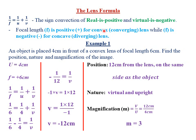The focal length f is positive for a convex, also called a converging, lens. This is because a convex or converging lens will always have a real principal focus, and because the focal length is the distance from the principal focus measured from the optical center, it means that if a convex lens has a real principal focus, it will always have a real positive value of focal length.